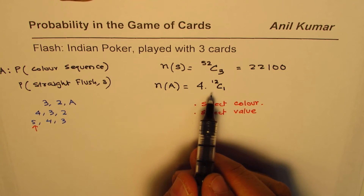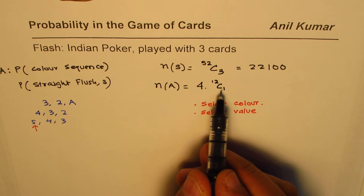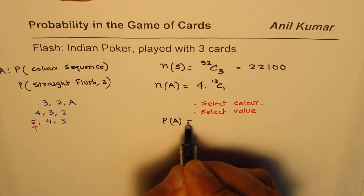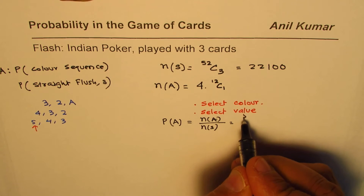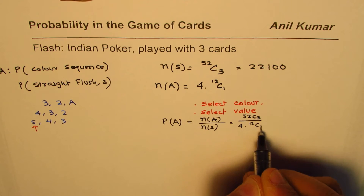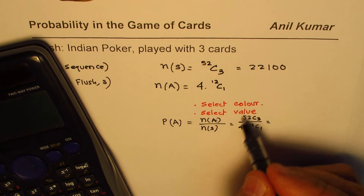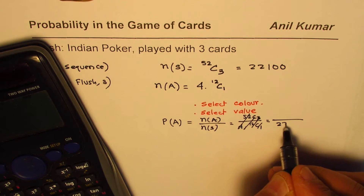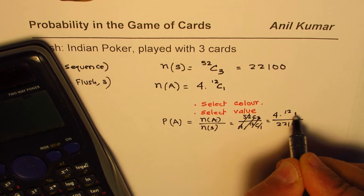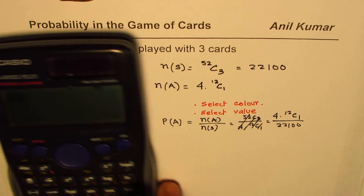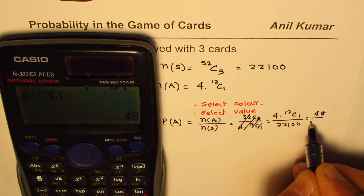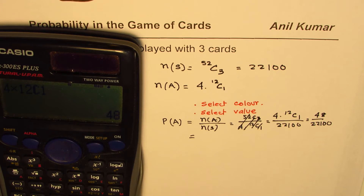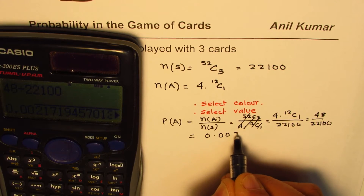Therefore, for a color sequence the favorable chances are 4 times 12C1, and the probability of the color sequence is this over the sample space: 4 × 12C1 divided by 52C3, which is 48 divided by 2200. That gives us a probability of approximately 0.00217 — it's pretty low to get a color sequence.